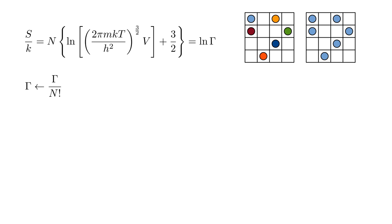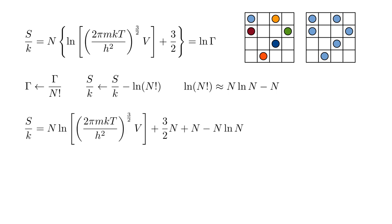Therefore, in our formula, we need to replace gamma by gamma over n factorial. This leads to s over k being replaced by s over k minus log n factorial. Using the approximation log n factorial equals n log n minus n.